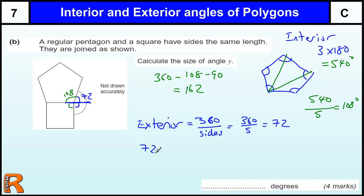So we could just do 72 plus 90, which is also 162. And that's 4 marks.